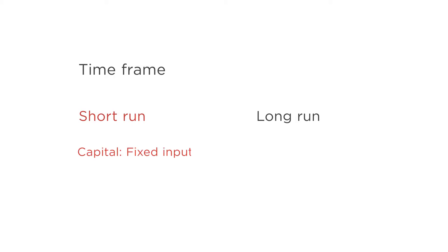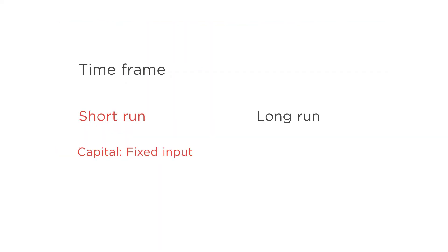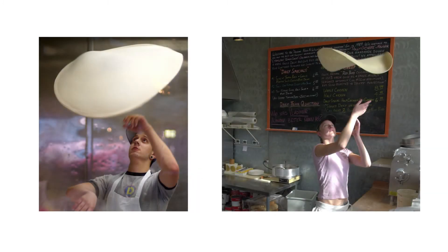In the short run, capital is a fixed input. Firms are stuck with their machinery, their factories, and their land. They can't easily sell these parts of their operation or buy new ones. The pizzeria downtown can't just knock out a wall of the kitchen to make room for a new brick oven — the pizzeria may need to purchase the neighboring store to make room for such an expansion, and changes like this take time. They can't be done in the short run. In the short run, labor is a variable input. Firms can bring on new workers or let old workers go. So the pizzeria can't order that new brick oven, but it could hire a couple extra cooks for the summer.